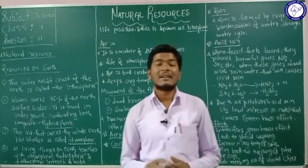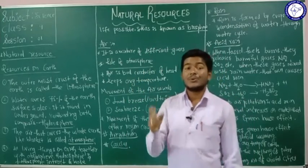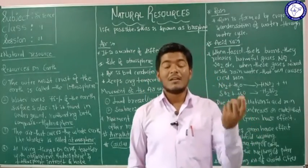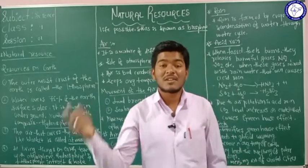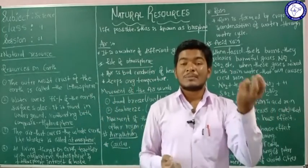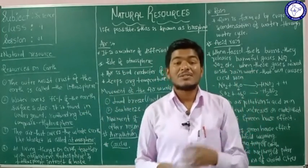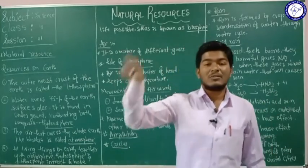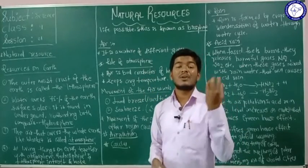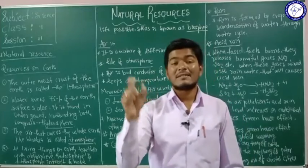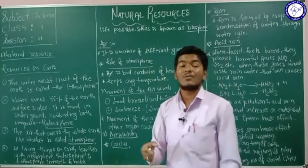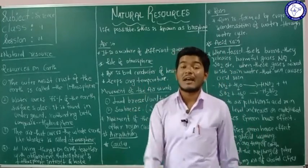Life on earth is possible due to the presence of some materials on the earth's surface. For example, life is possible due to the presence of oxygen, water, plants, and some minerals present on the earth's surface. All the materials that are helpful for humans and are obtained from nature are called natural resources. The presence of natural resources is helpful for life on earth.